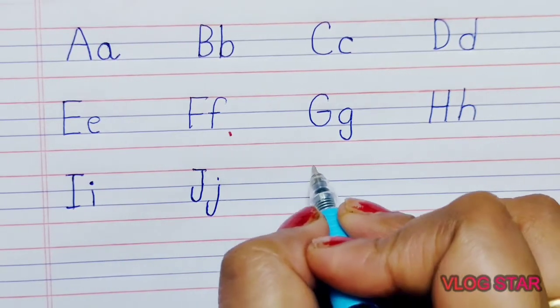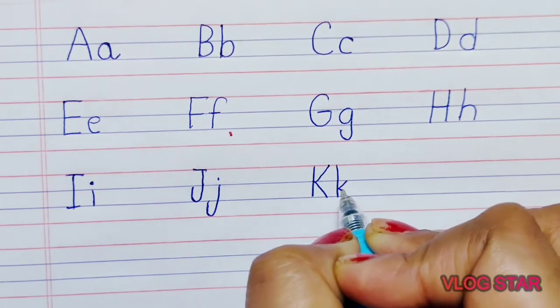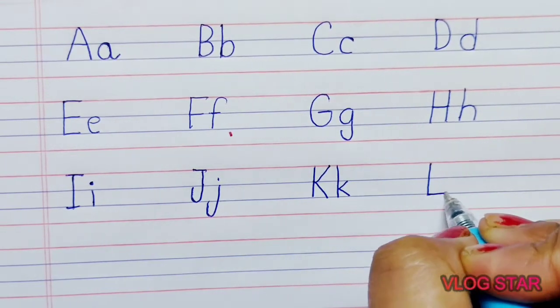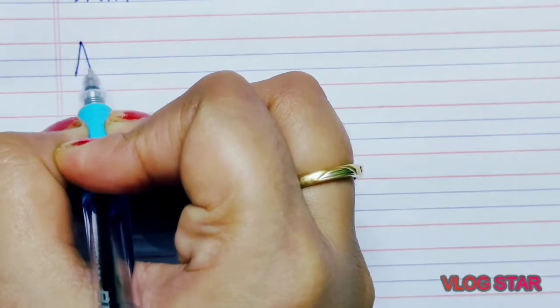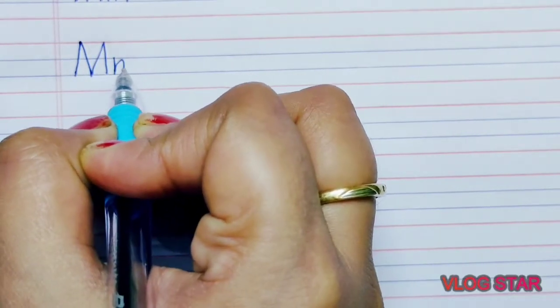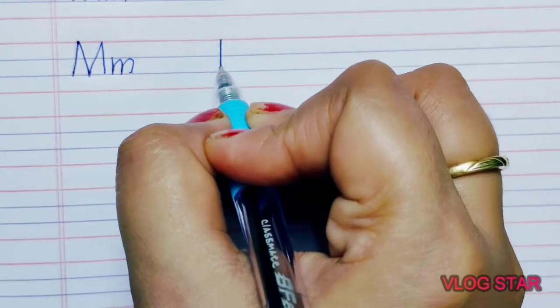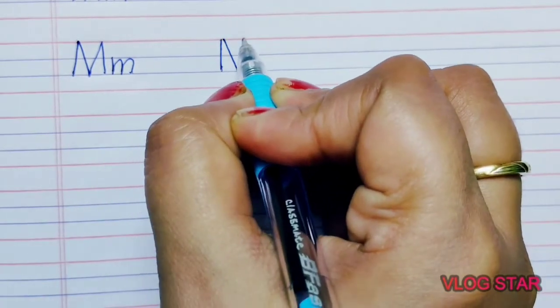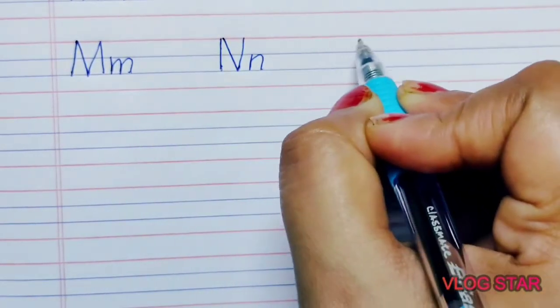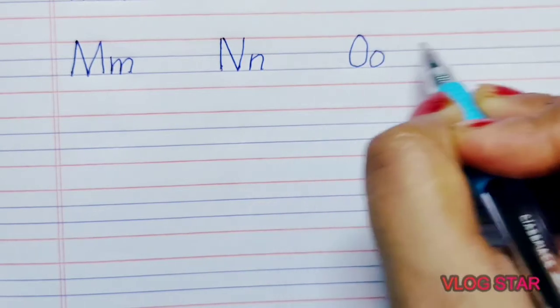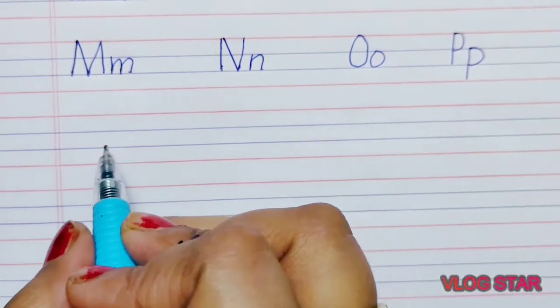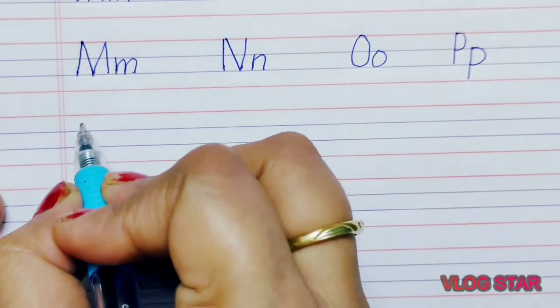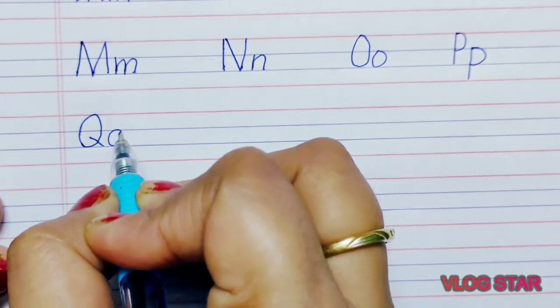K, K for kite. L, L for lion. M, M for mango. N, N for nest. O, O for owl. P, P for peacock. Q, Q for queen.